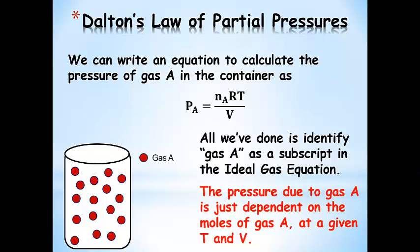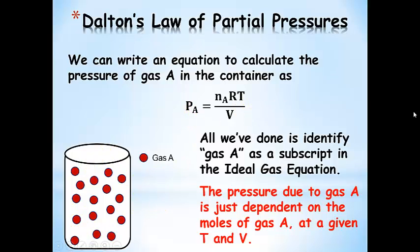We can write an equation to calculate the pressure of gas A. All we've done is subscripted the pressure and the moles — this is the pressure of gas A, and this is the moles of gas A. Since the only gas in the container is gas A, this is the total pressure. At any given temperature and volume, the pressure is just dependent on the moles of gas A.